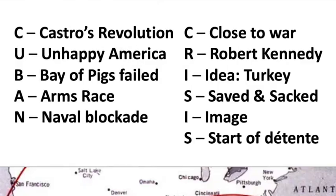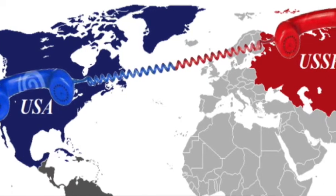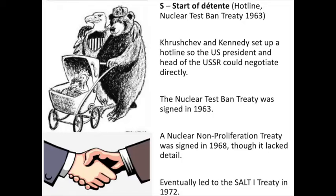S — start of détente, meaning a lessening of tensions. Because we got so close to nuclear war, both sides realised that brinkmanship — pushing each other right to the edge — was dangerous and they should make agreements. A hotline — a direct phone — was created between the President of America and the Secretary of the Soviet Union so the two leaders could negotiate directly. There was also the Test Ban Treaty in 1963, then the Nuclear Non-Proliferation Treaty in 1968 agreeing not to build more nuclear weapons, and eventually SALT-1 — the Strategic Arms Limitation Treaty — in 1972 between Nixon and Brezhnev.